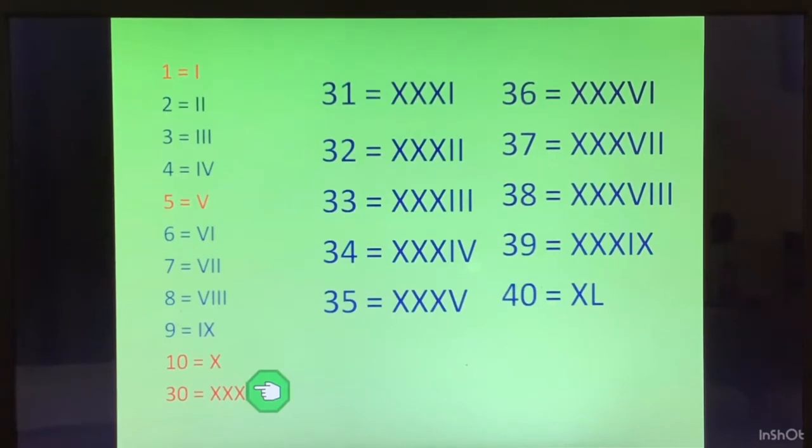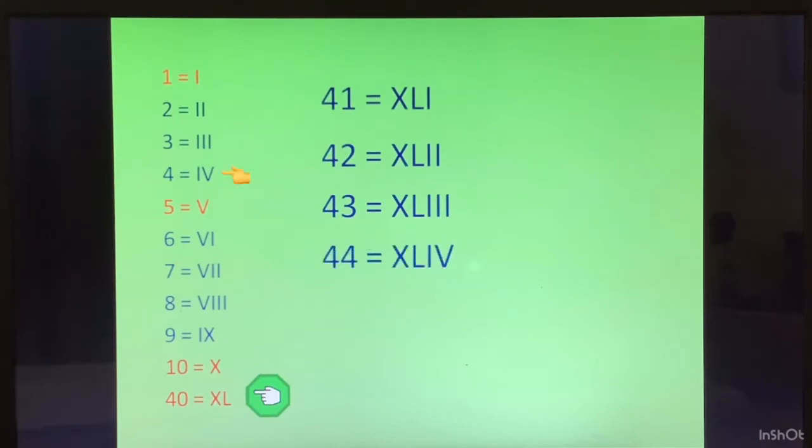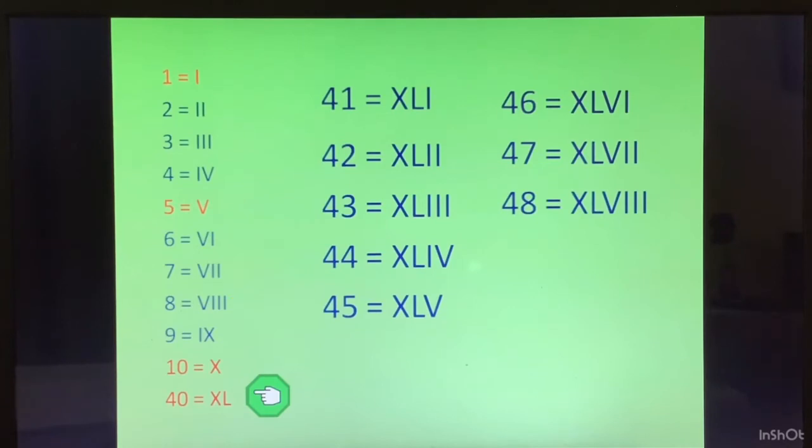Now for 41 to 49, we have to write XL in front. 41 is 40 plus 1, XLI. 42 is 40 plus 2, XLII. 43 is 40 plus 3, XLIII. 44 is XLIV. 45 is XLV. 46 is XLVI. 47 is XLVII. 48 is XLVIII. 49 is XLIX. 50, we know already L is 50. We written XL in front of 1 to 10 to generate 41 to 49.